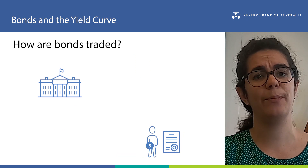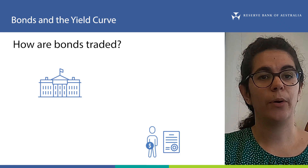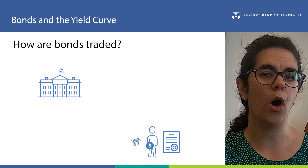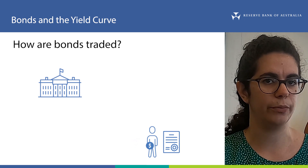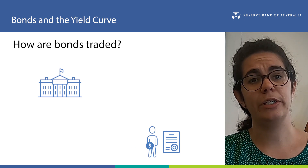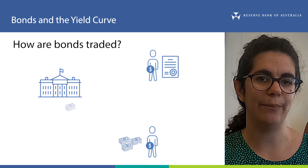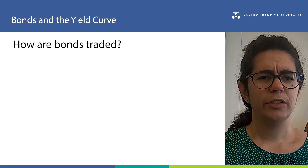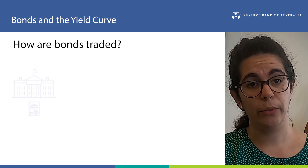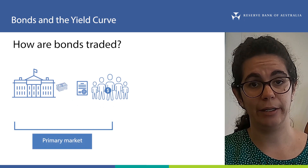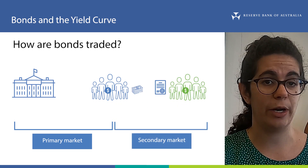The final feature is that bonds can be bought and sold by investors after they're issued. The bond's agreement promises to pay interest and principal to whoever owns the bond when those payments are due, which might not necessarily be the original investor. If an investor no longer wishes to own a bond, they can sell it to another investor who will receive the bond and all future payments promised in it. This means there are two bond markets: the primary market, where bonds are first issued, and the secondary market, where already-issued bonds are traded amongst investors.